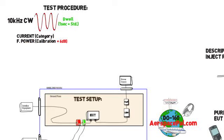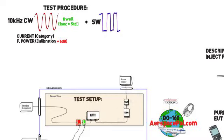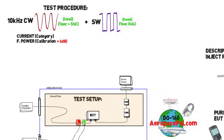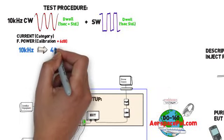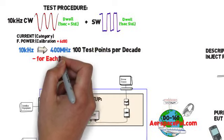After this minimum dwell time is achieved they will switch the function generator to square wave and hit the same level, hold for the minimum dwell time and then move on to the next frequency. They'll sweep the entire frequency range from 10kHz to 400MHz in this manner hitting 100 points per decade. This will be repeated for each mode and on each bundle.